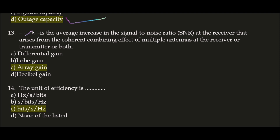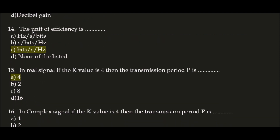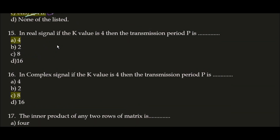Next question: the unit of efficiency is bits per second per hertz. Option C is correct — the unit of spectral efficiency is bits per second per hertz.